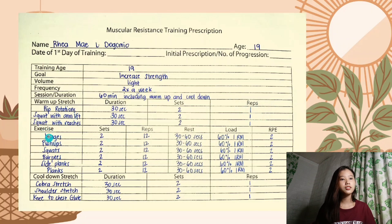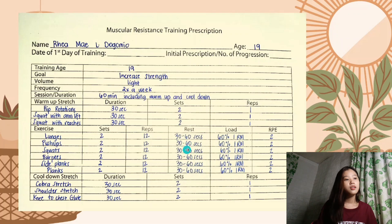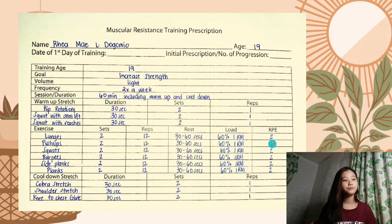The main exercises are lunges, push-ups, squats, burpees, side planks, and planks. Each exercise has 2 sets and 12 repetitions, with 32 seconds duration, 60 seconds rest between sets, 60 percent load, and an RPE of 2.